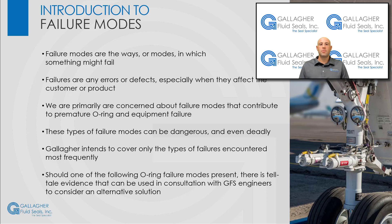While there are several different types and causes of seal failure, we intend to cover only the types encountered most frequently. With intelligent planning, O-ring selection, and installation practices, the following O-ring failure modes should be avoided. The O-ring is an incredibly versatile and effective seal. However, as applications become more extreme, it is critical to test equipment. Should one of the following O-ring failure modes appear, there is tell-tale evidence that can be used in consultation with GFS engineers to consider an alternate solution.